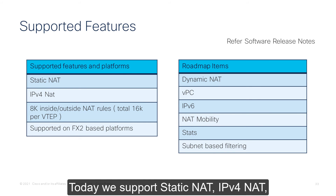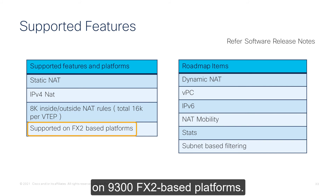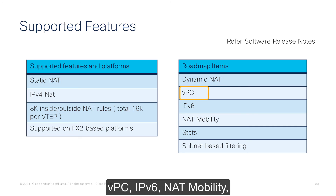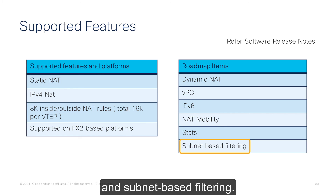Supported features: today we support static NAT, IPv4 NAT, and 8K NAT rules/entries, and this is supported on 9300 FX2 based platforms. In the future, we want to support dynamic NAT, VPC, IPv6, NAT mobility, statistics for NAT, and subnet-based filtering.